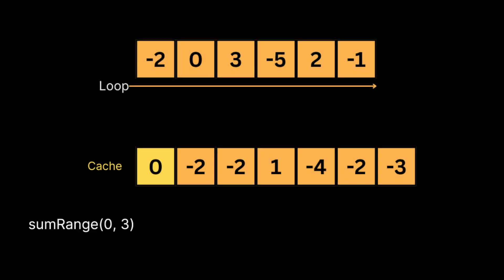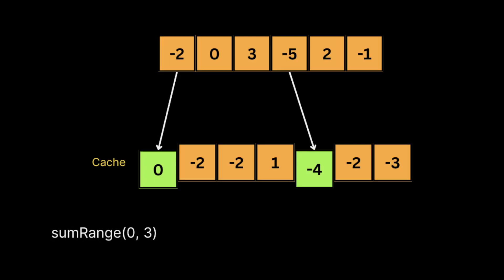we have a cache array that stores all cumulative sums of elements up to each index. We can now easily call sumRange to calculate the sum of elements in range 0 to 3. We take the cumulative sum up to index 3, which is -4, minus the cumulative sum up to index 0, which is 0. This gives us -4, the sum of elements in range 0 to 3.